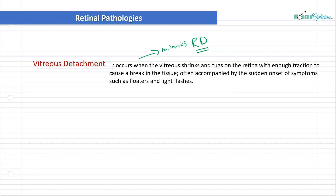A lot of the time it's just a vitreous detachment and the patient is sent on their way and told they'll be all right. However, they don't know that, and neither do you. So the moment you have things like an increase in floaters and light flashes, you have to refer immediately for further examination. Maybe it's just a vitreous detachment — not a huge deal — but the symptoms mimic each other, so it's very, very important to understand this concept even though it's not a serious condition on its own.